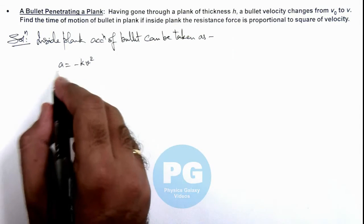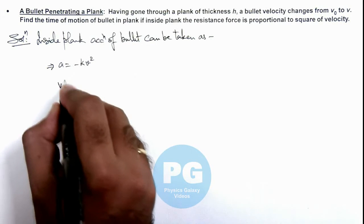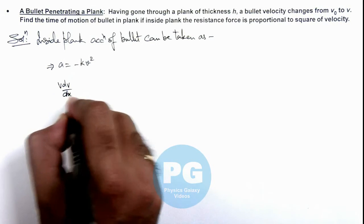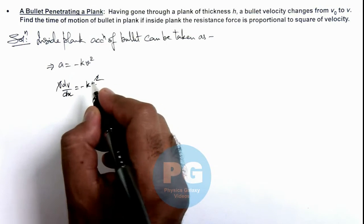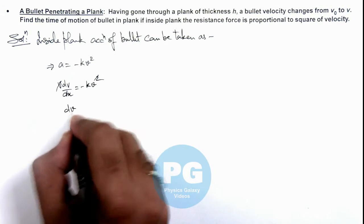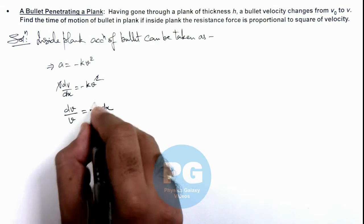In this situation we can write this acceleration as v(dv/dx) = -kv². Here one v gets cancelled out, and this can be written as dv/v = -k dx. If we integrate these terms,